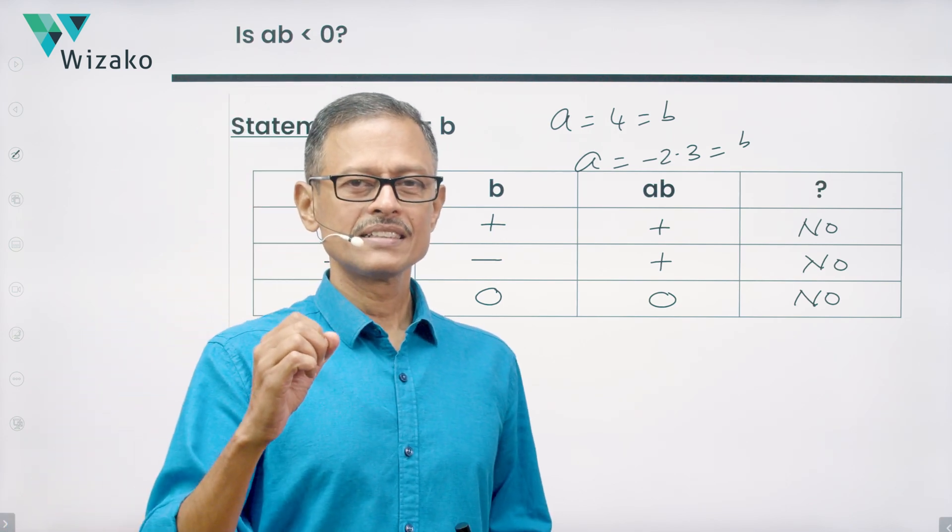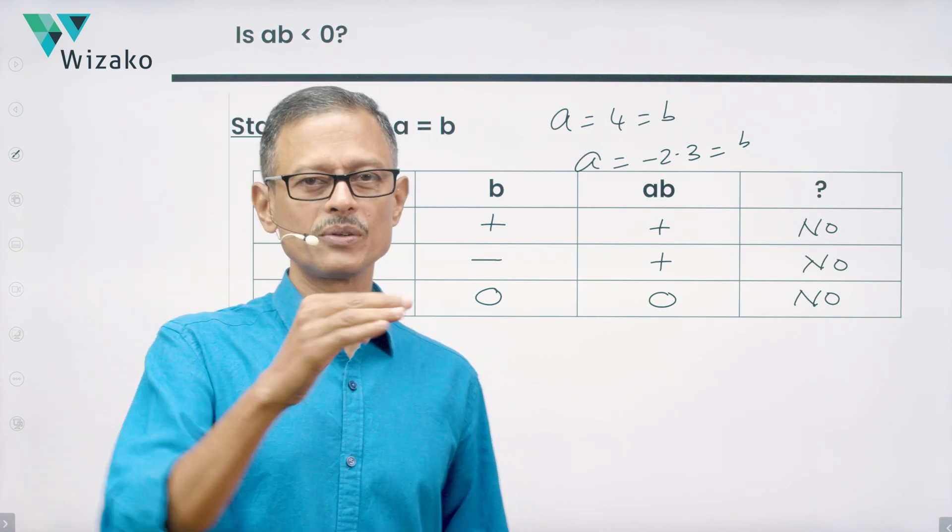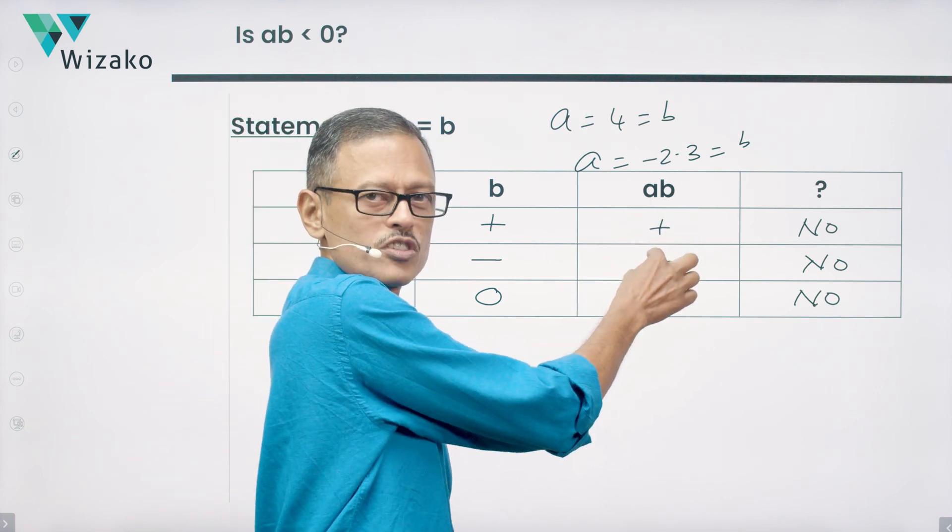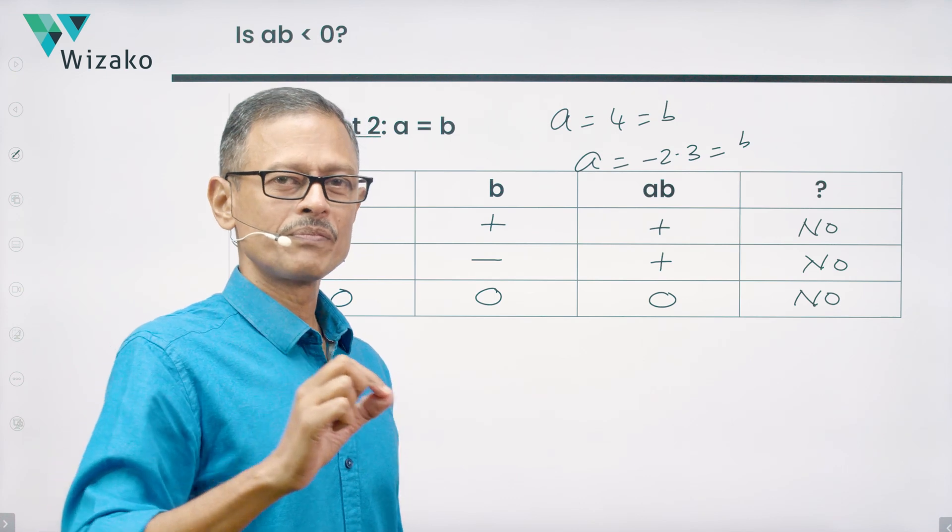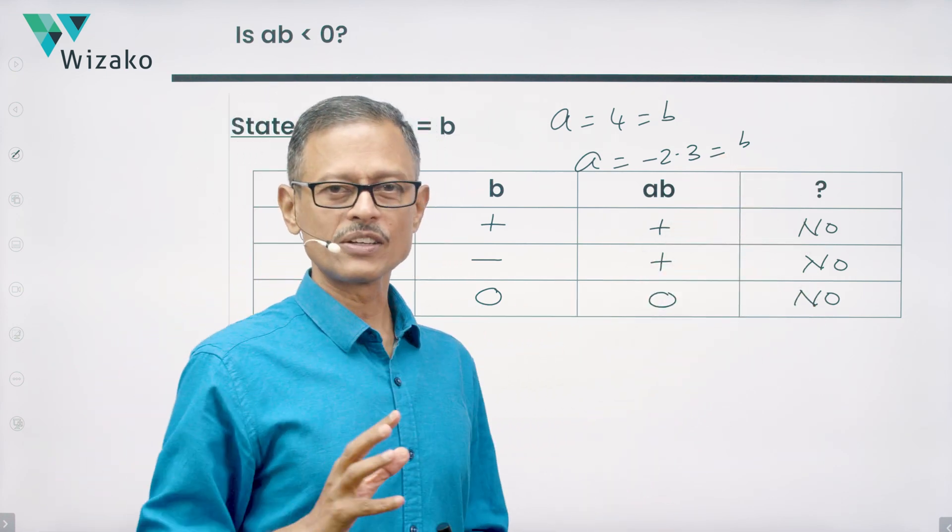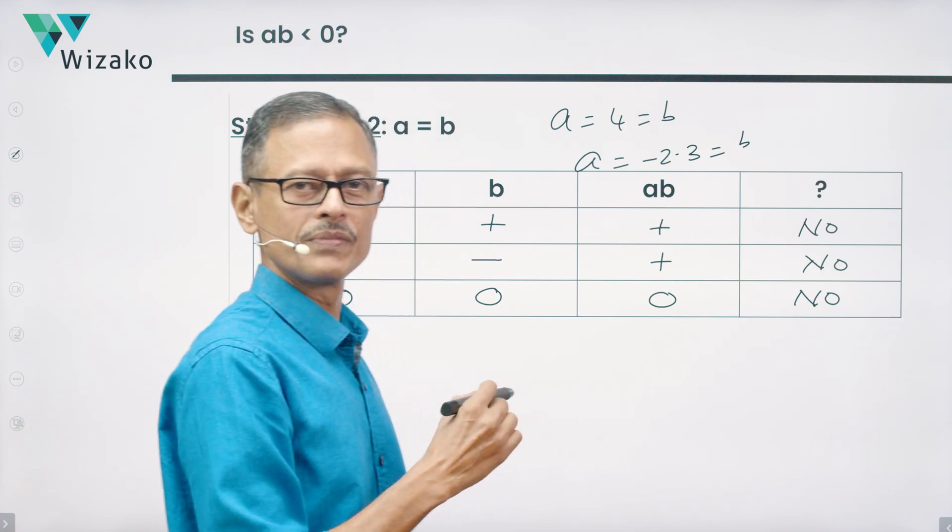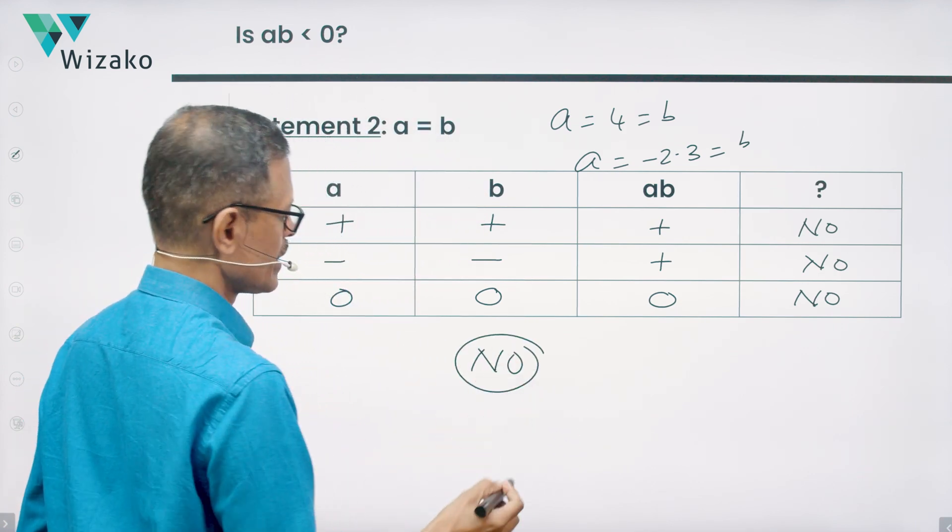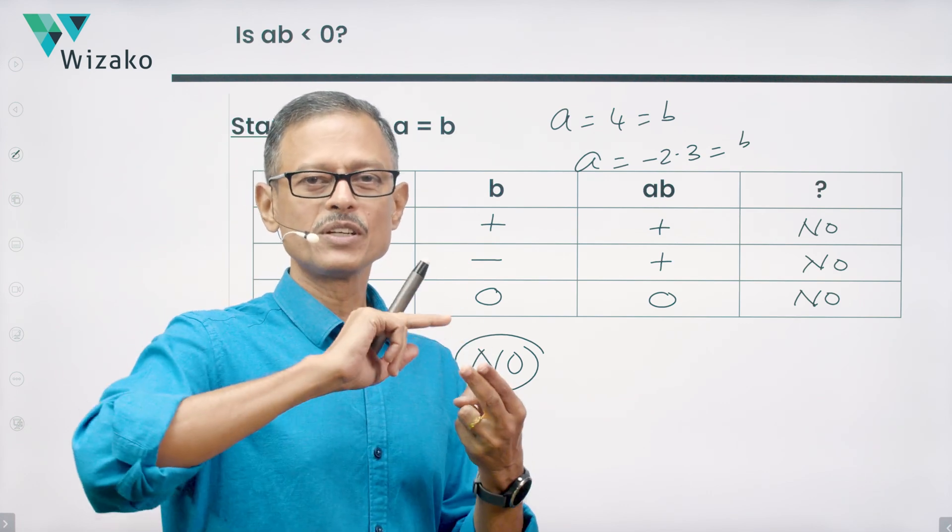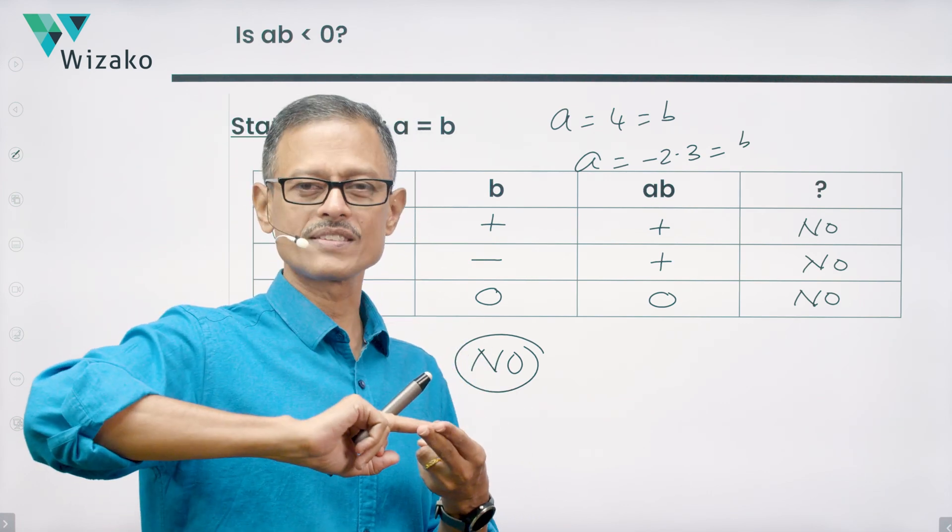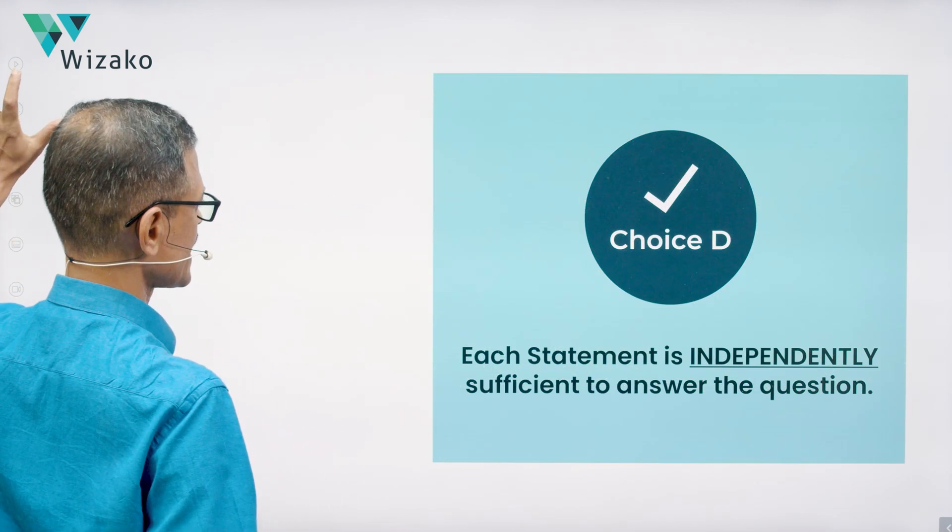So if A is equal to B, then there are three possibilities. Both could be positive. Both could be negative. Both could be zero. Both positive, AB is positive. Both negative, AB is positive. The answer is a no. Both zero. AB is zero. But the answer to our question is a no. So statement two also gives us a definite no. Statement two is also therefore sufficient. Statement one was sufficient, gave us a no as the answer. Statement two is sufficient. It's also giving us a no as an answer. Each statement is independently sufficient. So choice D is the correct answer to this question.